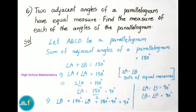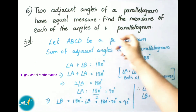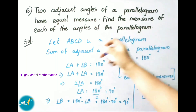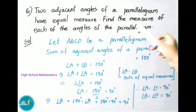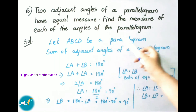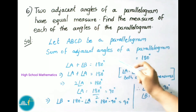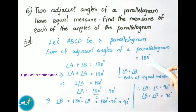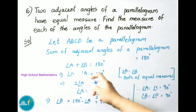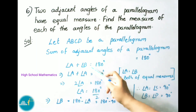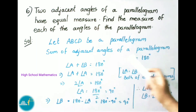Question number 6: Two adjacent angles of a parallelogram have equal measure. Find the measure of each of the angles of the parallelogram. Let ABCD be a parallelogram. The sum of adjacent angles of a parallelogram is 180 degrees. Angle A and angle B are adjacent angles, so angle A plus angle B equals 180 degrees.